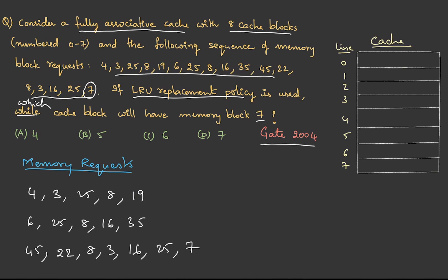Let's fill the cache. 4 will be line 0, then 3, then 25, then 8, then 19, then 6. Then 25, which is already available, so this is a hit—move it to the right side. Then 8, which is also there, so this is a hit—move it to the right. Then 16. Here in the cache there are a couple of lines which are free, so let's fill them: 16, then 35. Now it is completely full.